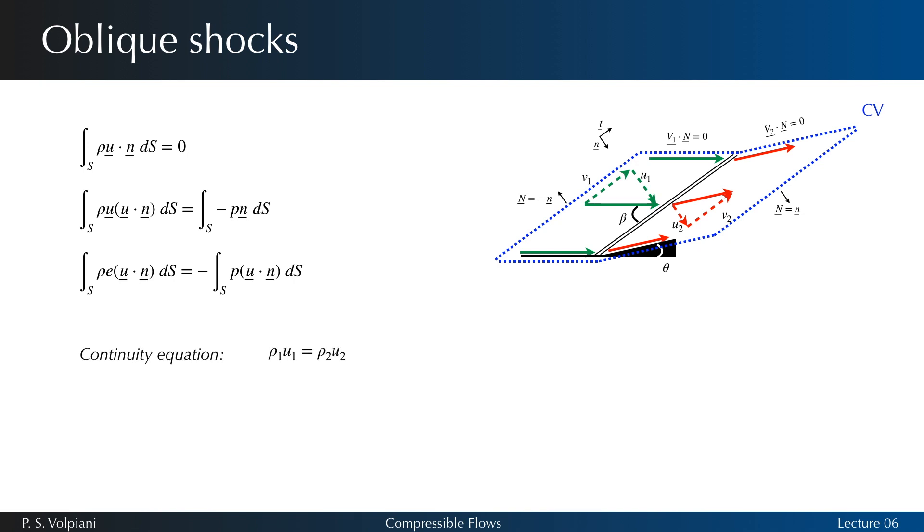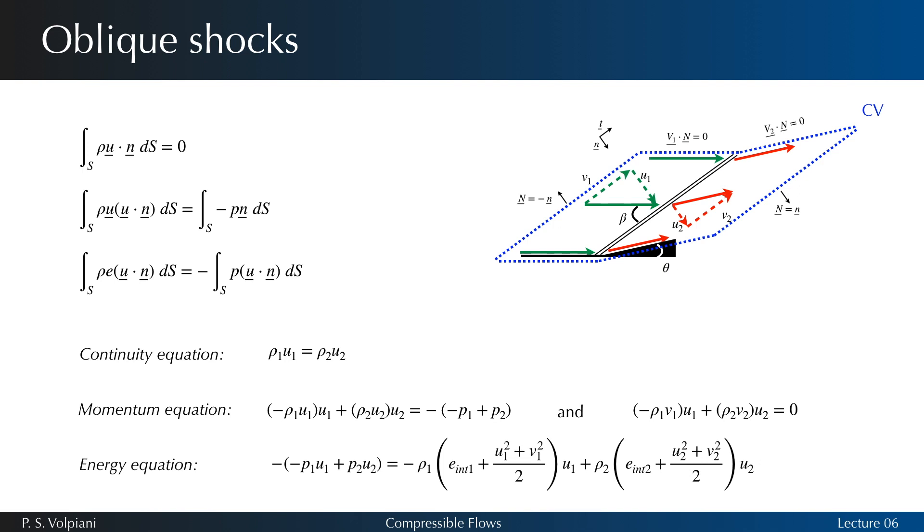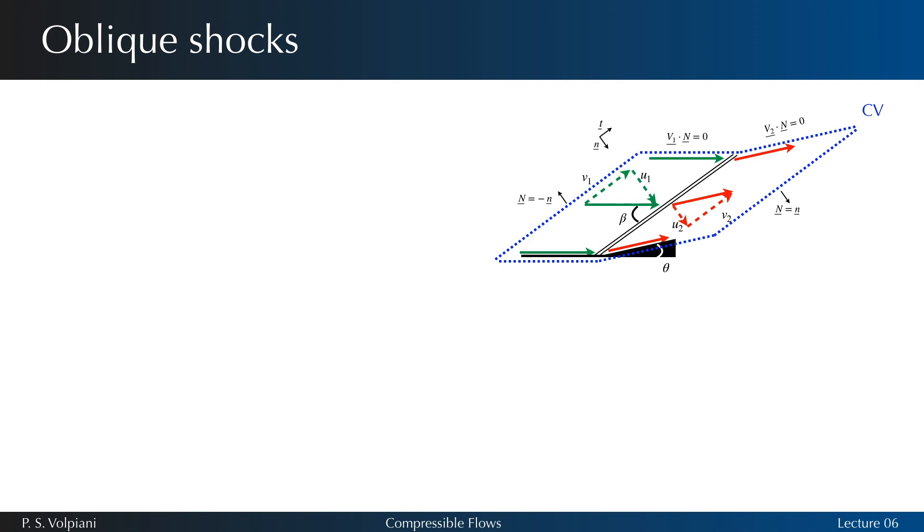The continuity equation for oblique shock reads rho1 times U1 equals rho2 times U2. Considering steady flow with no body forces, the momentum equation can be solved in normal and tangential directions. We also need the energy equation. After simplification, we obtain the following set of equations.